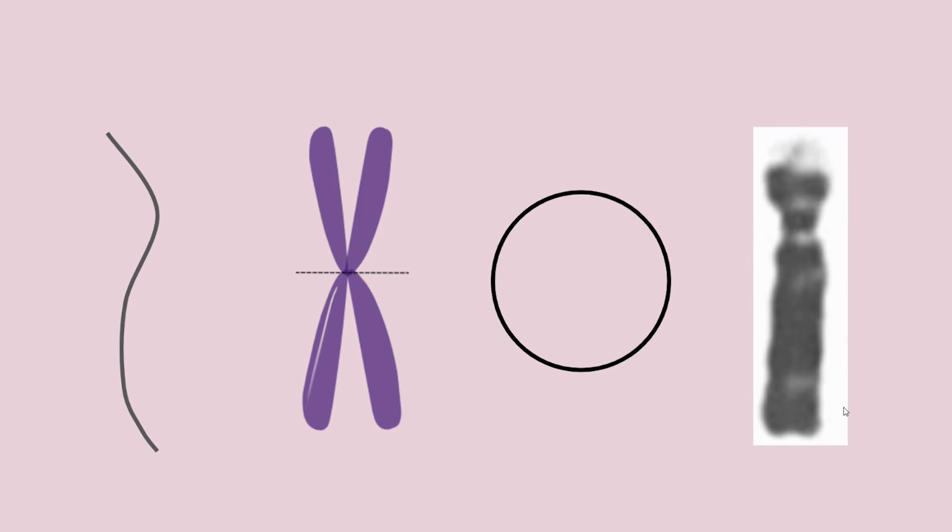Prokaryotes typically have a single circular chromosome, but let's focus on eukaryotes for now.